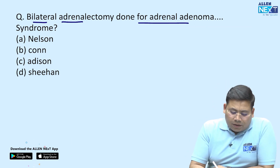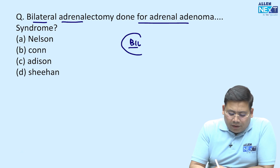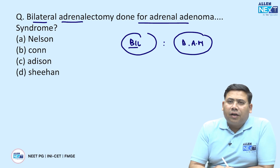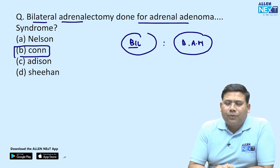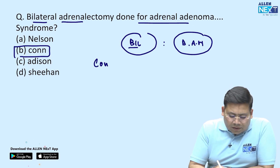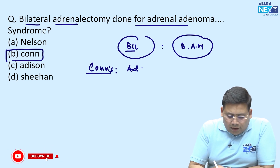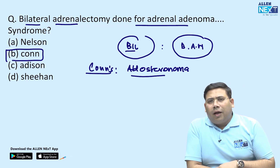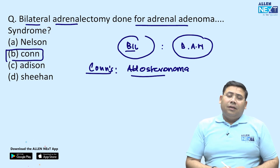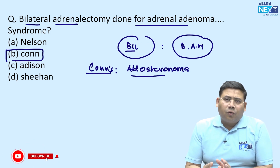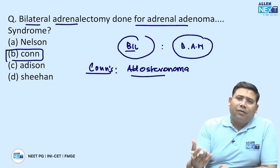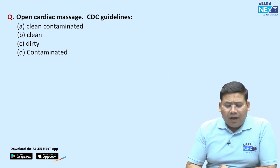Bilateral adrenalectomy is done for which adenomas? Bilateral adrenalectomy is done for bilateral adrenal hyperplasia associated with Conn's syndrome. So among the options, it is aldosteronoma which may require this. Aldosteronoma is suspected in patients with poorly controlled hypertension on multiple antihypertensive drugs. In case of bilateral adrenal hyperplasia with bilateral adenomas, we may go for bilateral adrenalectomy.